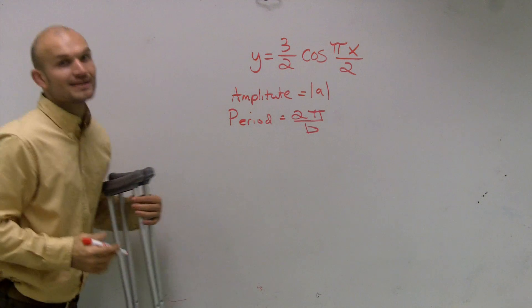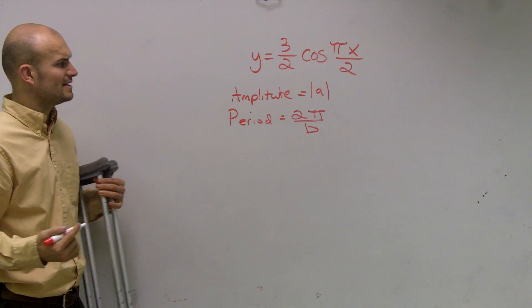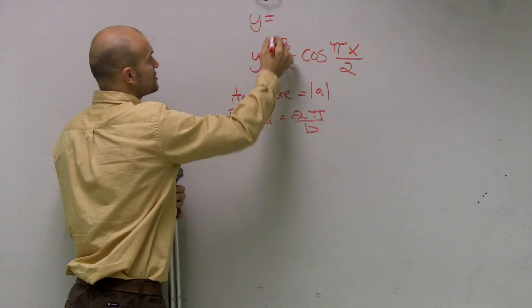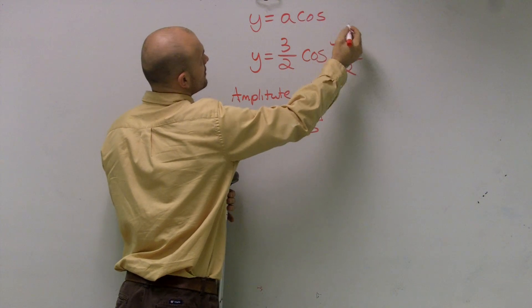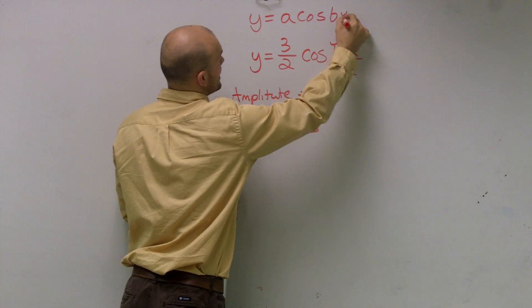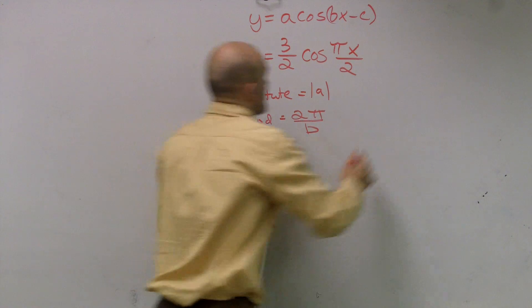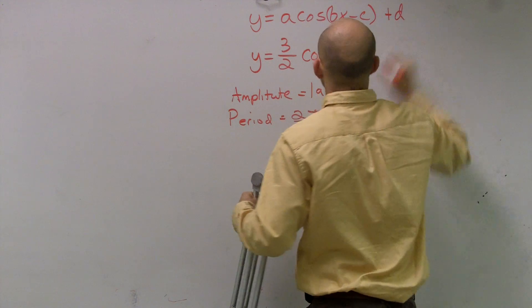Now, in case you guys have not written it down and you want to remember where am I getting these A's and B's: For any given cosine function, we have A cosine of (Bx minus C) plus D.